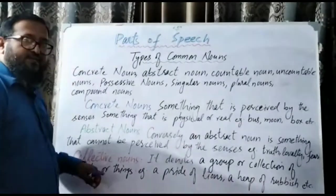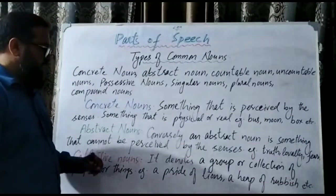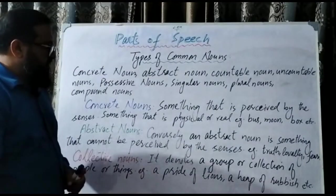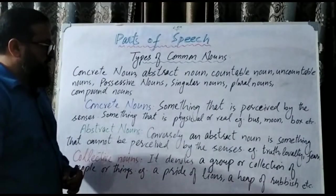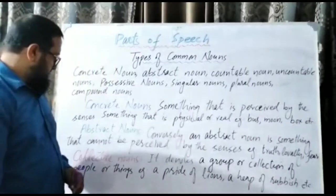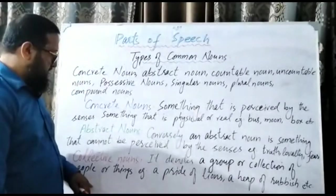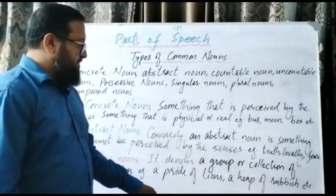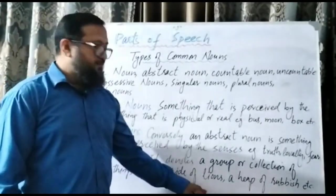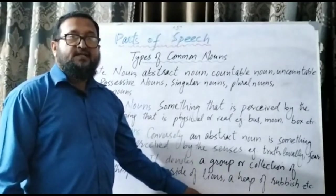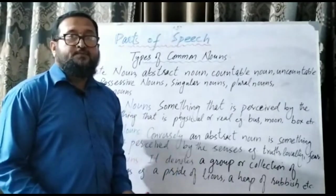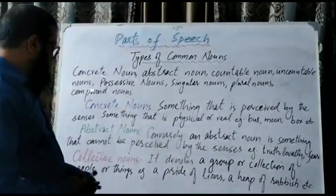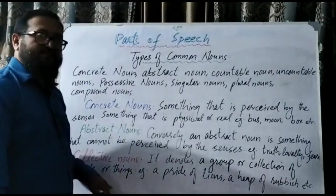Next are collective nouns. A collective noun denotes a group or collection of people or things, like 'a pride of lions' or 'a heap of rubbish.' These kinds of groups and collections are called collective nouns.